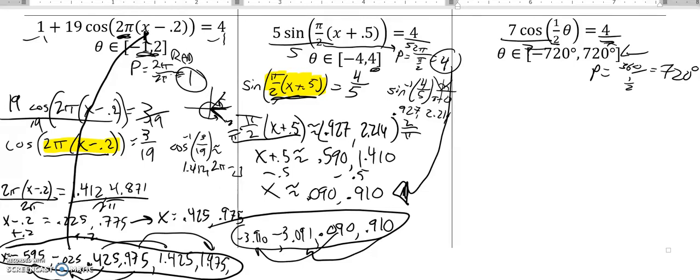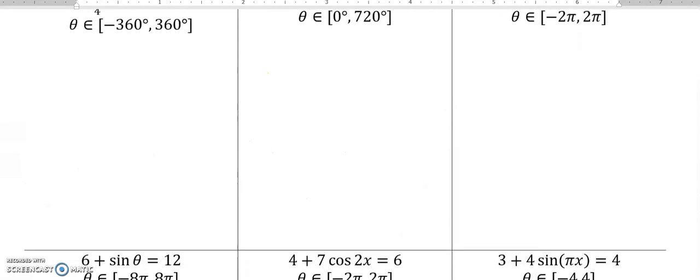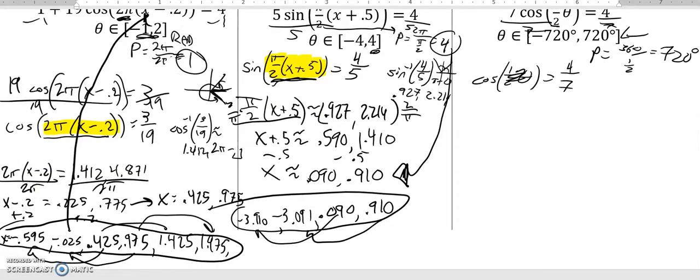So I end up with cosine of 1 half θ equals 4/7. And so cosine of this thing is 4/7. So let me go arc cosine of 4/7 to get some values for what that could be.